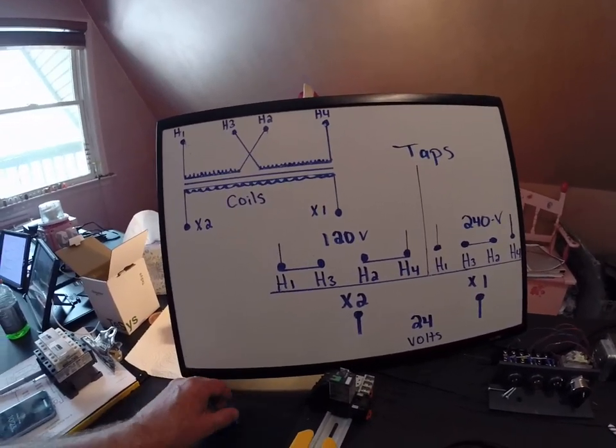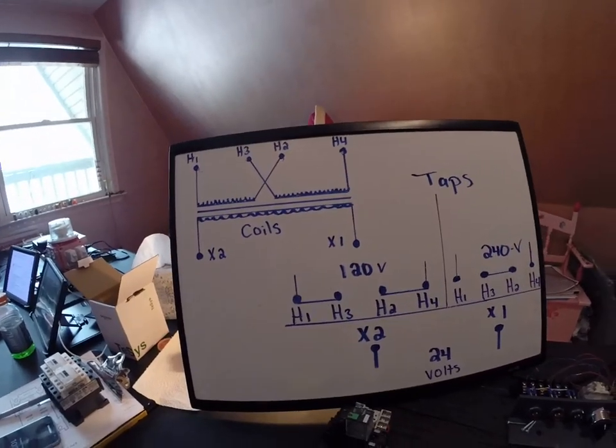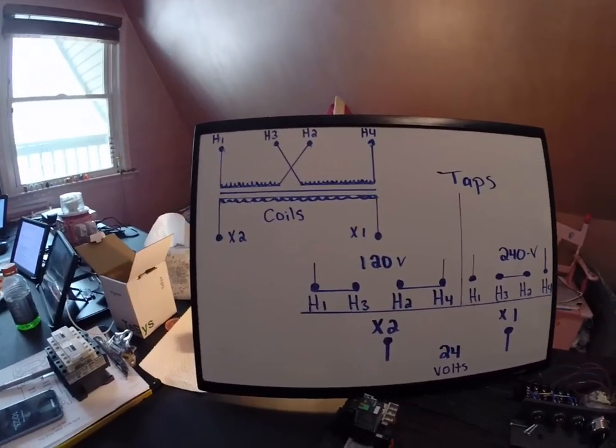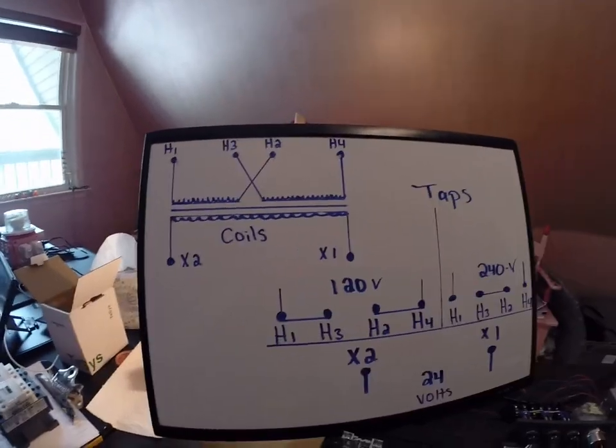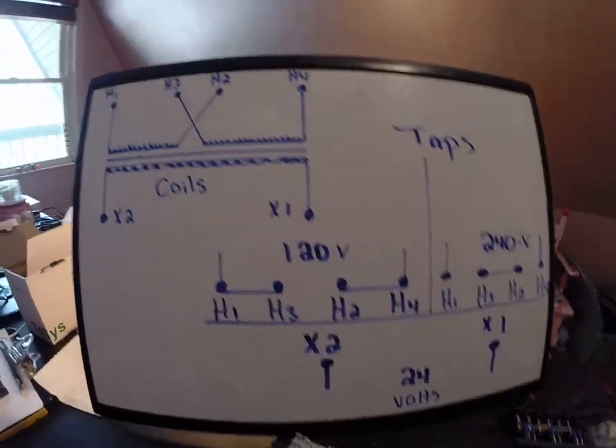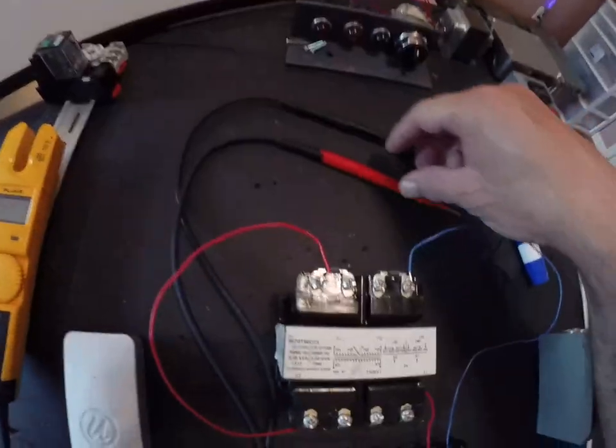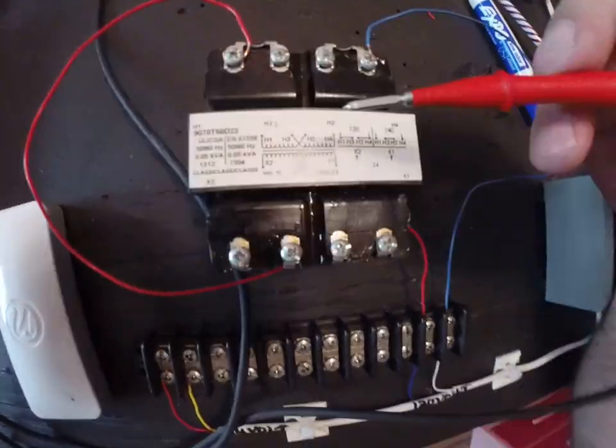You're usually stepping down the voltage from the source of the motor control center. You'd find these inside control cabinets and everywhere else having to do with motor controls. So these two diagrams are really the two diagrams that are on the front of this control transformer.